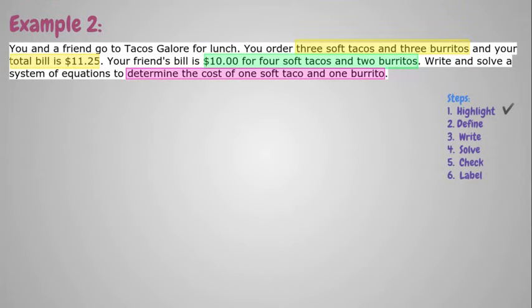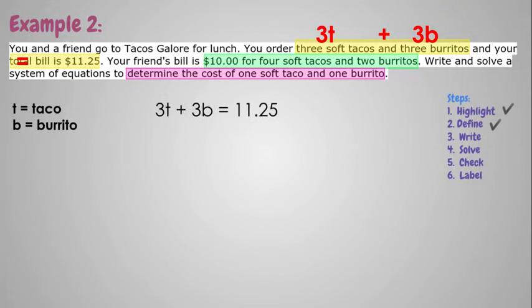So I'm going to use t for taco and b for burrito. And now I'm going to write in my problem. Before I write my equations, I'm going to mark up the problem. So three soft tacos I'm going to put is 3t, and that's combined with, which means we're adding, three burritos, which is 3b, and the total is $11.25. So that's our first equation. It was written pretty much right in the problem for us. 3t plus 3b equals $11.25. Our friend's bill is $10 for four soft tacos combined with two burritos. So the equation is going to be 4t plus 2b equals 10. Now we have our system.